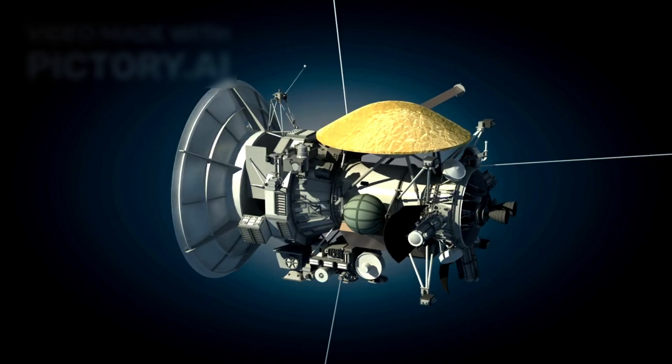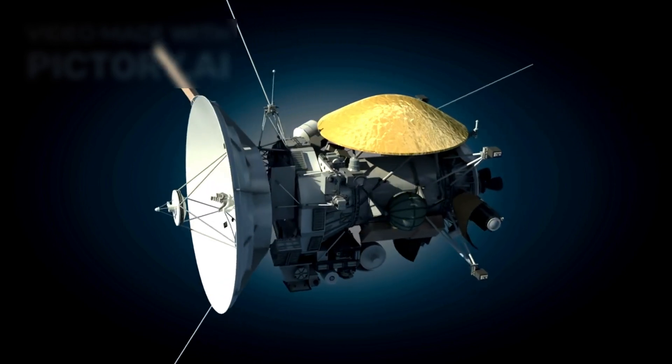And Cassini, in its final descent, came too close to the keyhole. It wasn't just a probe falling into clouds.